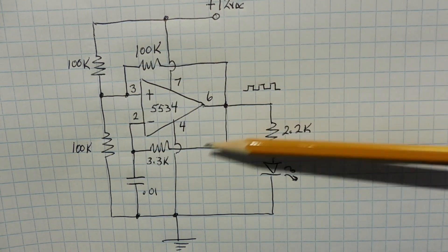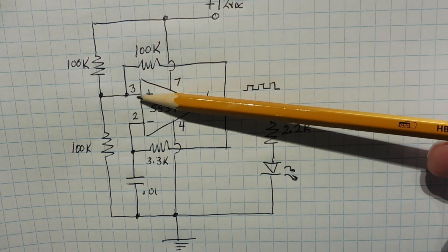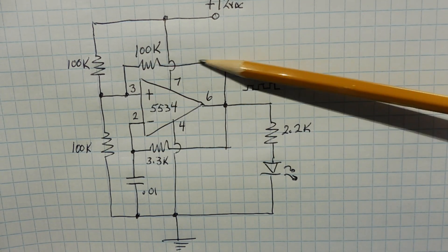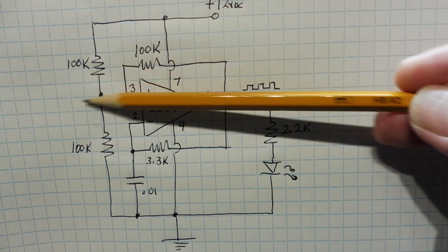So now the capacitor will start discharging because pin 6 is low, and when it hits 4 volts, it will trigger again, pin 6 will go high, which puts this resistor in parallel with this resistor, and it will switch. And that causes the circuit to oscillate.